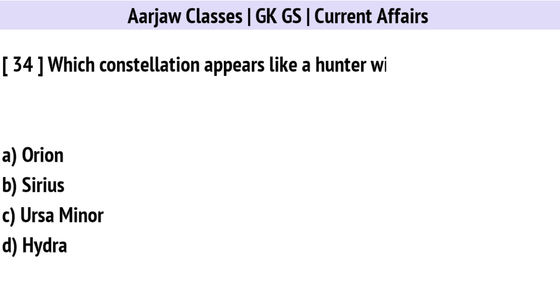Which constellation appears like a hunter with a bow and arrow? The right option is A: Orion.